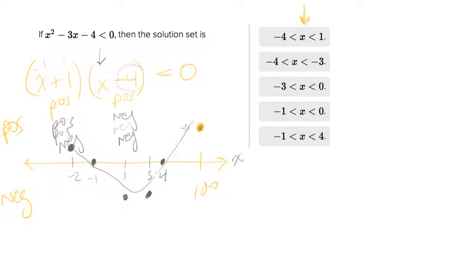And when is it negative? It's negative between negative 1 and 4. It's this region, that's what they ask for, when is it less than 0. And it is less than 0 between negative 1 and 4.